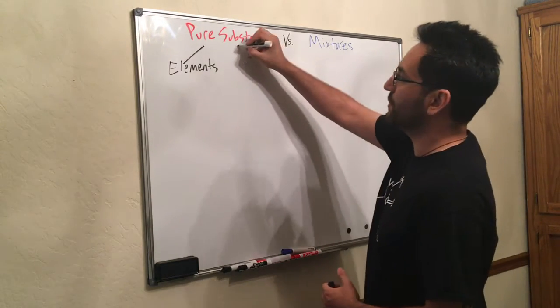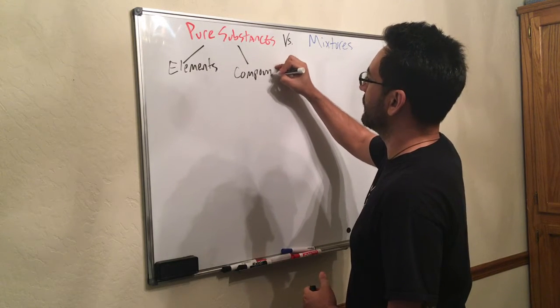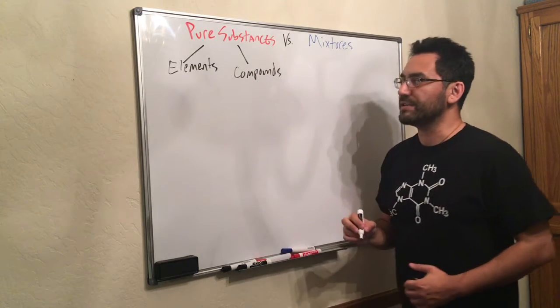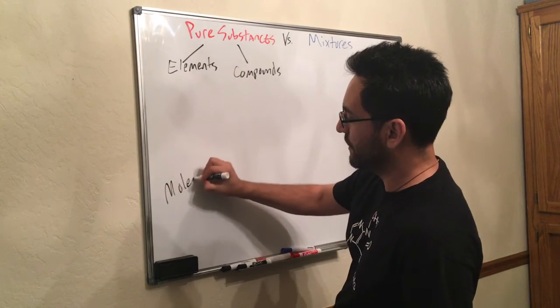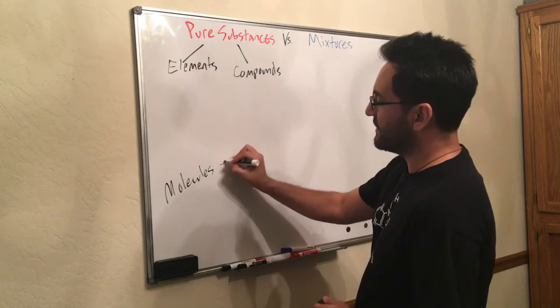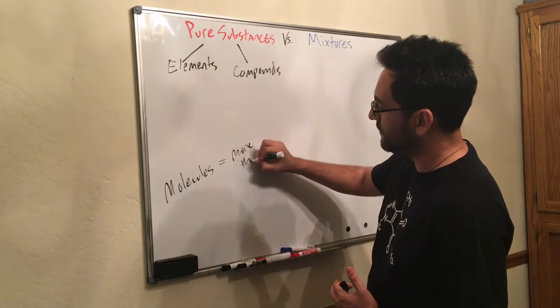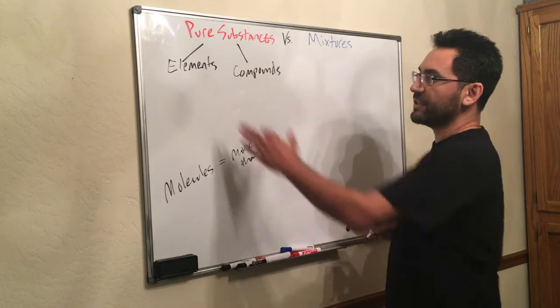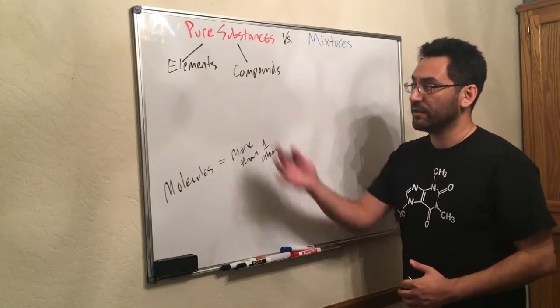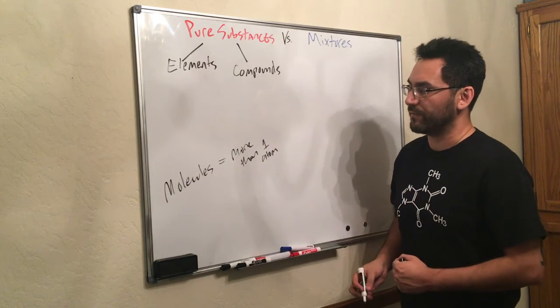Another thing that falls under pure substances are compounds. Now remember there is a difference between compounds and molecules. Molecules simply means we have more than one atom. So we can actually have atomic or molecular elements, if you remember from one of the earlier videos.